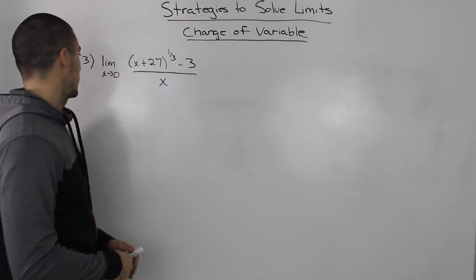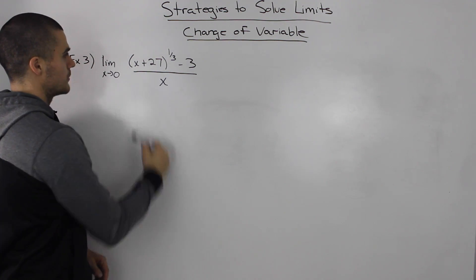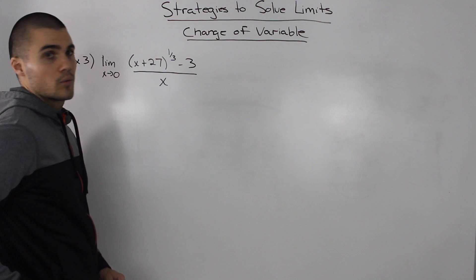What's the first thing we check with limits? Can we make a direct substitution? If we substitute zero for x, we get a denominator of zero, so that won't work.